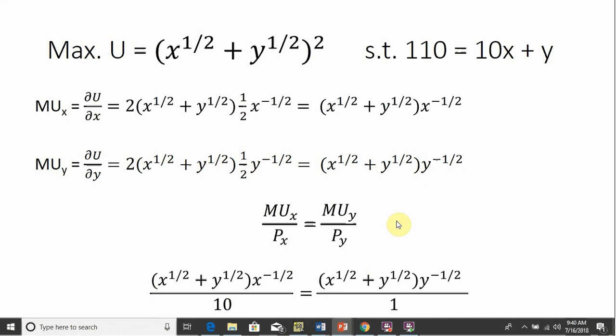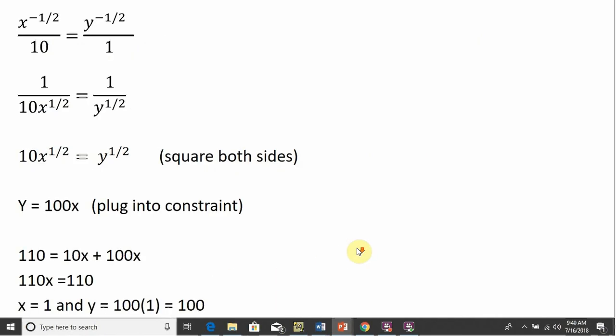Setting up our maximizing condition, marginal utility per dollar is equal across both goods. Make my substitutions here, the marginal utility of good X divided by the price of good X. Price of good X is $10. Marginal utility of good Y divided by the price of good Y. Price of good Y is just the coefficient in front of the Y term, it's just 1. And then we're going to simplify this. One of the first things that I see is that we've got this term in parentheses over here and also over here, so that will cancel.